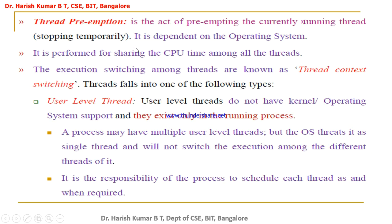Thread preemption: when the CPU is allocated to some thread for execution, you can forcibly take back the CPU from the running thread. The act of forcibly taking back the CPU from the running thread is called thread preemption — stopping it temporarily to share CPU time among all other threads.